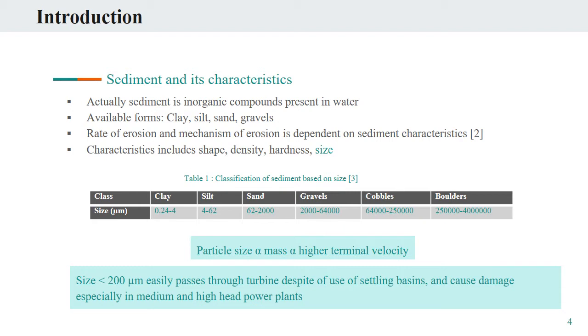Usually, sediment particles having high mass value have high terminal velocity and tend to settle at higher rate while flowing from upstream to downstream. Past literature also shows that sediment size slowly decreases as the sediment flows from the headwork to downstream. In hydropower plants, it is evident that the size less than 200 microns can easily pass through the turbine and cause serious damage in medium and high head hydropower plants, despite the use of settling basins and other trapping systems.